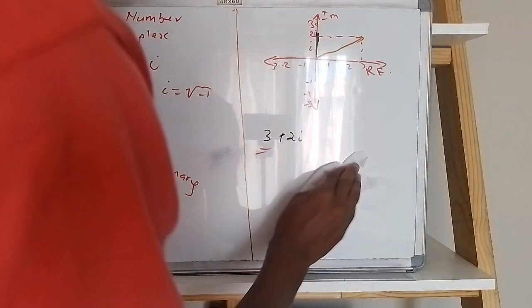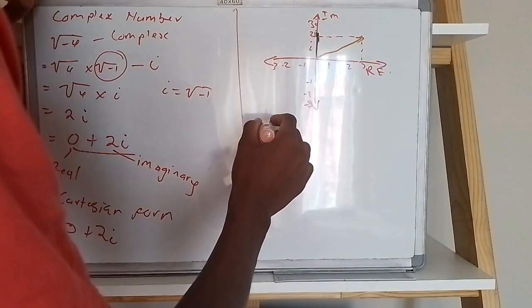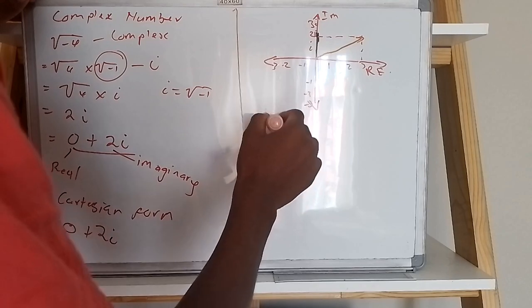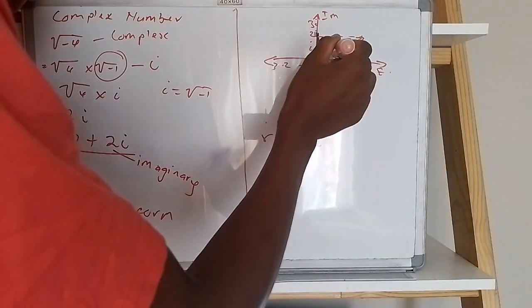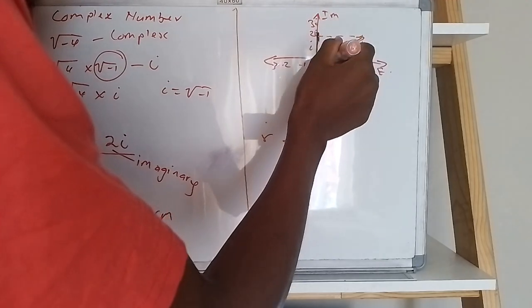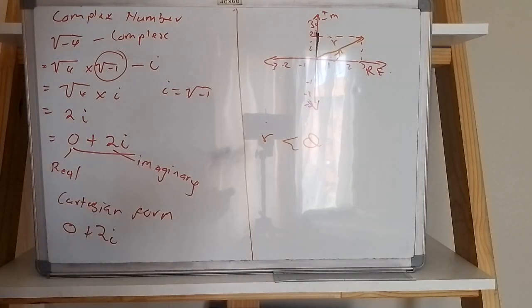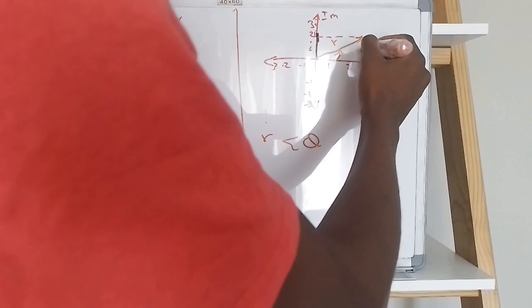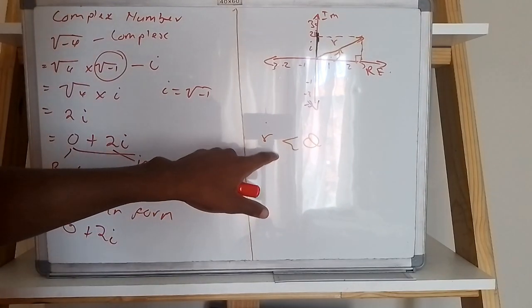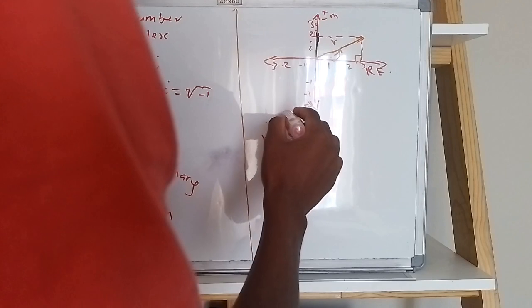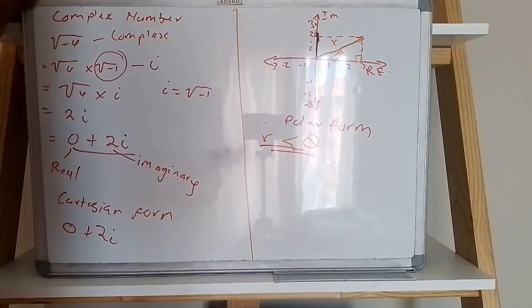Now if I want to represent the same thing in polar form, I need what we call the resultant, which is r — sometimes called the hypotenuse — and I need the angle that r creates relative to my real part. If I close the triangle here, this gives me a right angle triangle, and I represent my answer in polar form as r at angle theta.